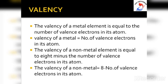The valency of an element depends on the number of valence electrons in its atom, because only the valence electrons take part in chemical bonding. The valency of an element is either equal to the number of valence electrons in its atom, or equal to the number of electrons required to complete 8 electrons in the valence shell. In general, the valency of a metal is equal to the number of valence electrons in its atom.